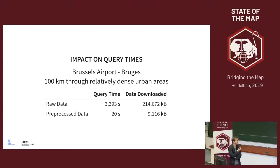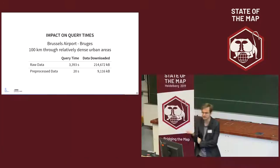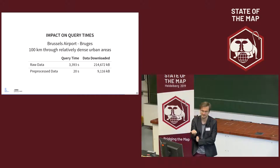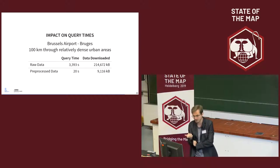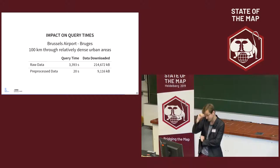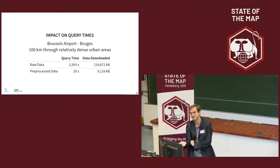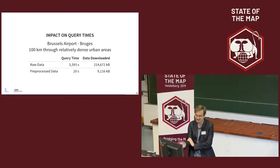The overall impact on query times: the example is Brussels Airport to Bruges, roughly 100 kilometers. Using raw data this requires about 250 megabytes of compressed gzip transfer — that's a lot of data to push into a client, especially a mobile phone, and query times were close to one hour. Now it's down to 20 seconds, which is the demo I just gave. Downloaded data should be around 9 megabytes — a massive difference from 250 megabytes.